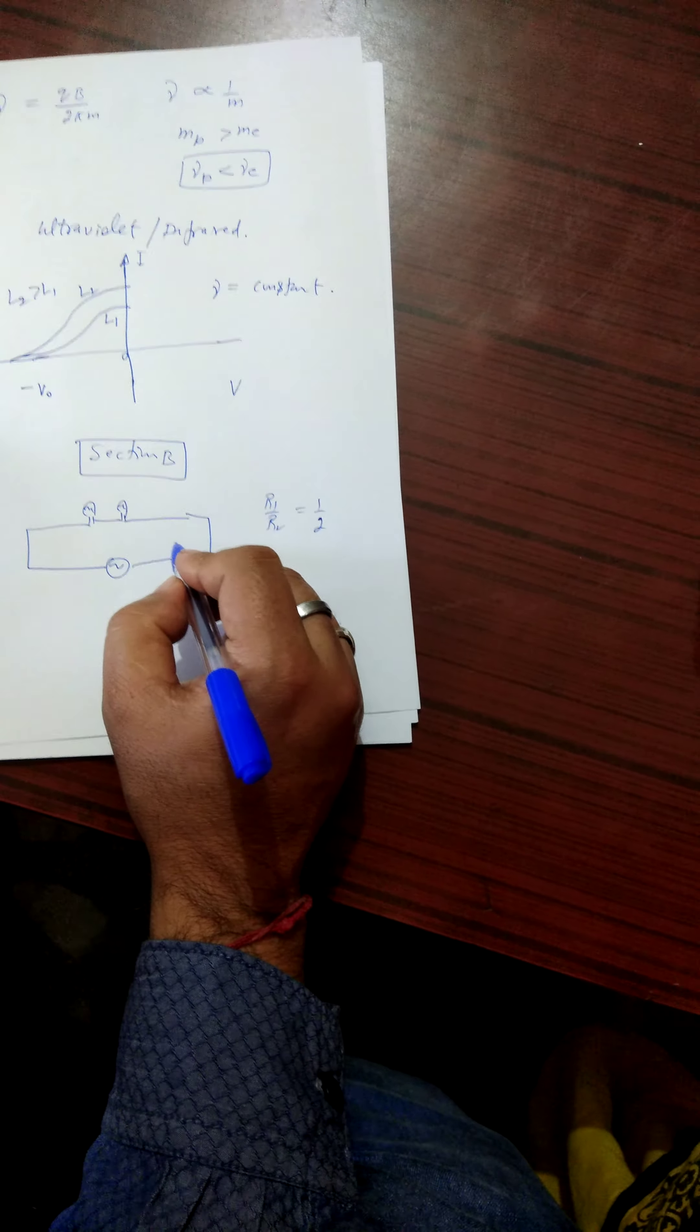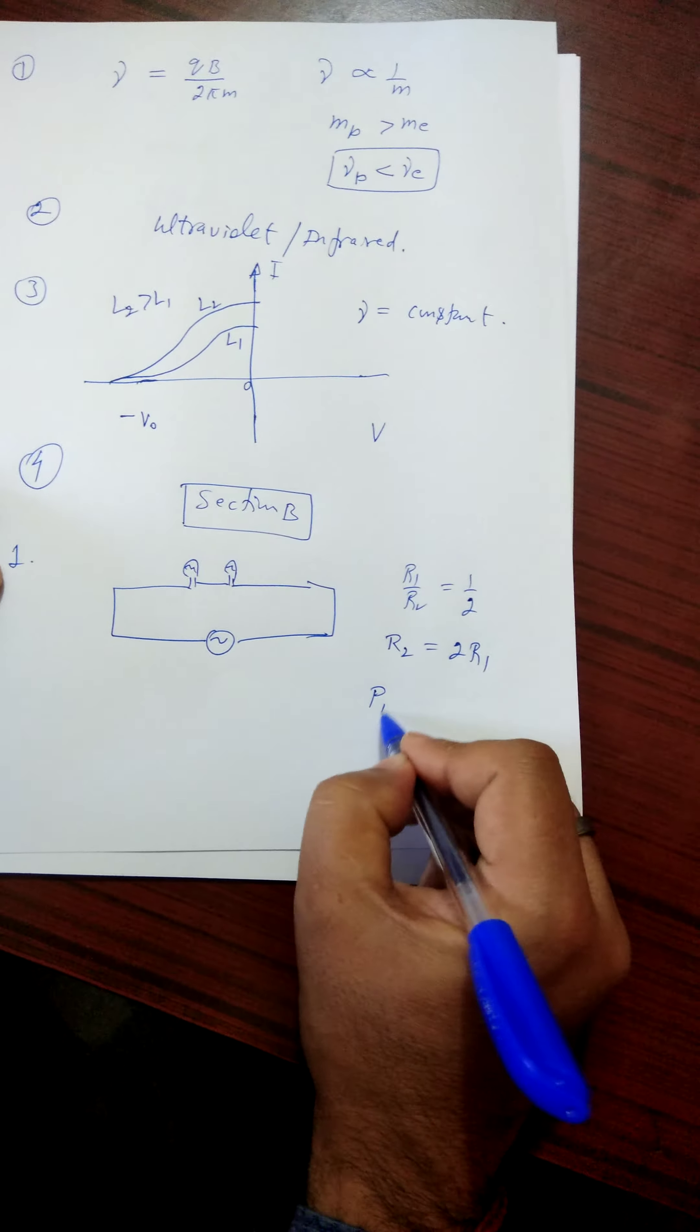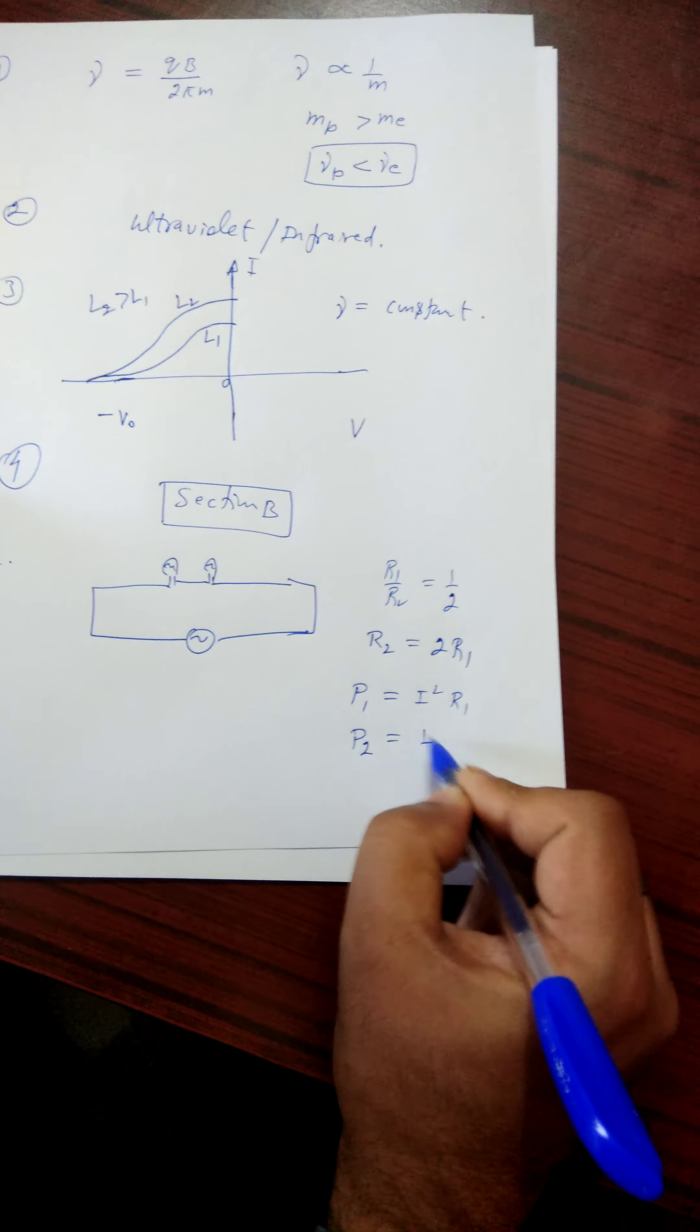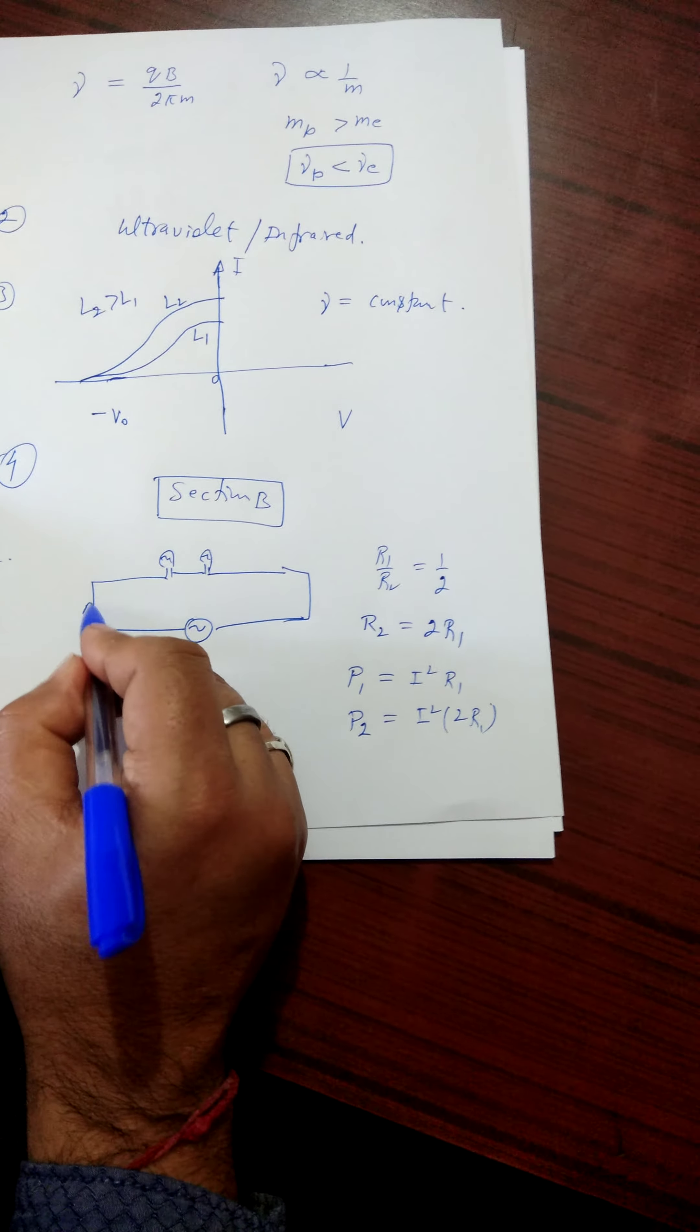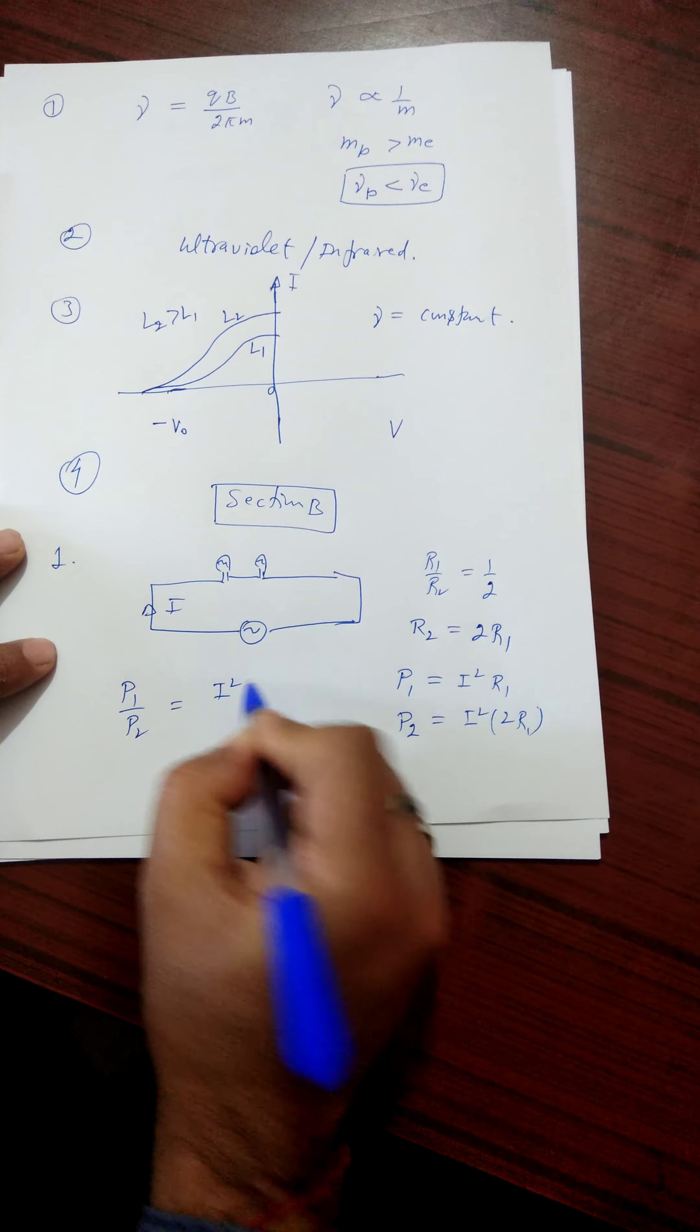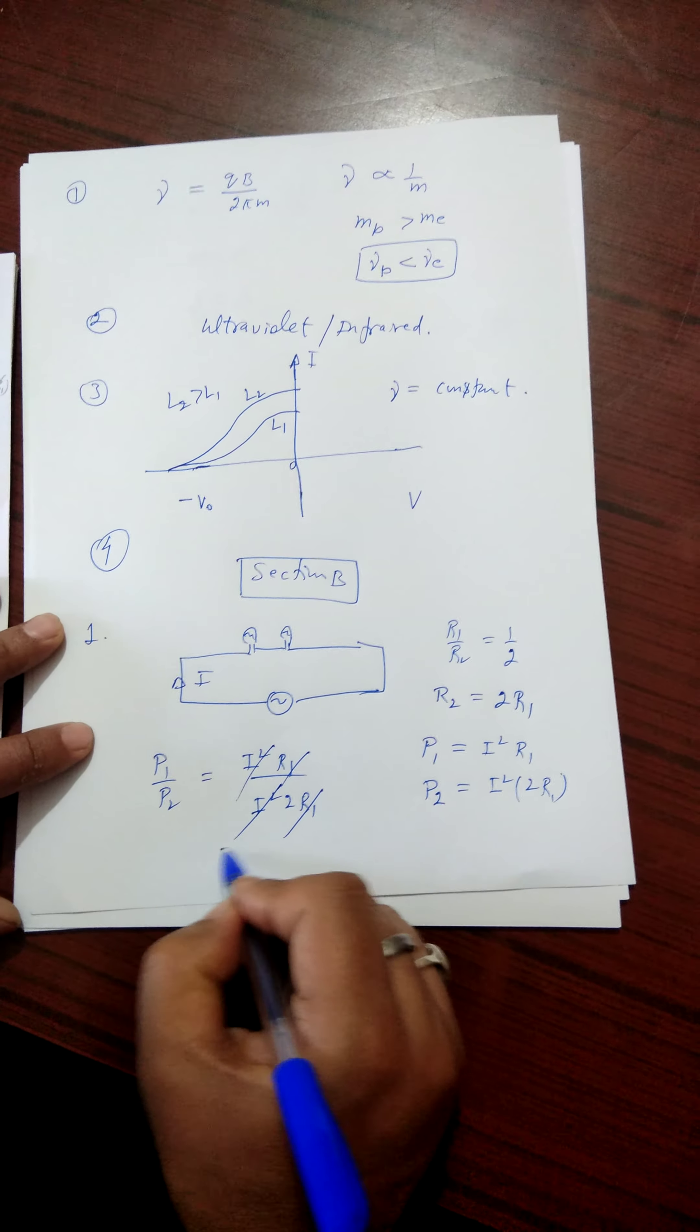And the resistance ratio provided one is to 2. And therefore, R2 is twice of R1. And power dissipated through resistance R1 is I square R1. And in the second resistance, it is I square to R1. In series combination, current is same through both bulbs. Therefore, the ratio of the power dissipated is I square R1 to I square 2 R1, and it is 1 is to 2.